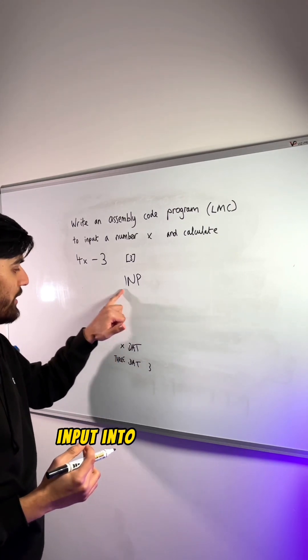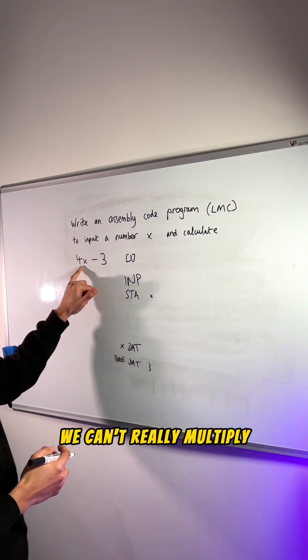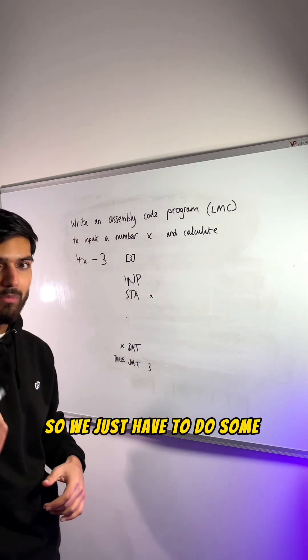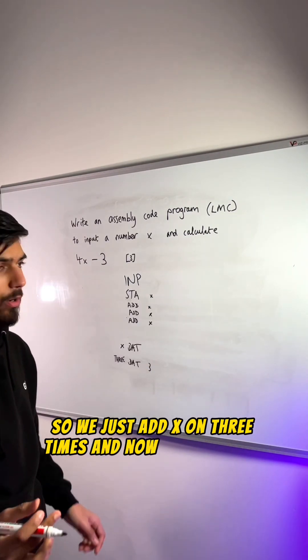Now what we need to do is store this input into our variable x. Since this is assembly language we can't really multiply, so we just have to do some repeated addition. So we just add x on three times and now we've got 4x.